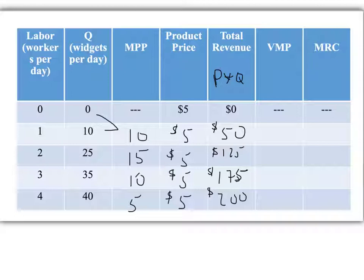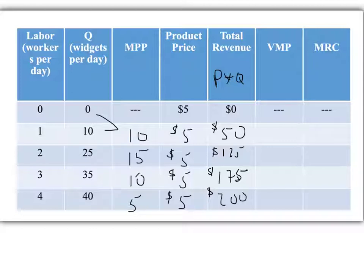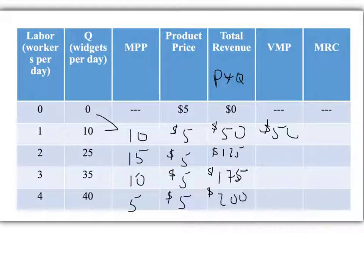For VMP, there are two ways to calculate it depending on what you're given. If you have total revenue, you can measure the change in total revenue. The other way is MPP times price. For the first worker, 50 minus 0 is 50, and MPP times price also gives us 50. Go ahead and pause to solve the rest of this column.